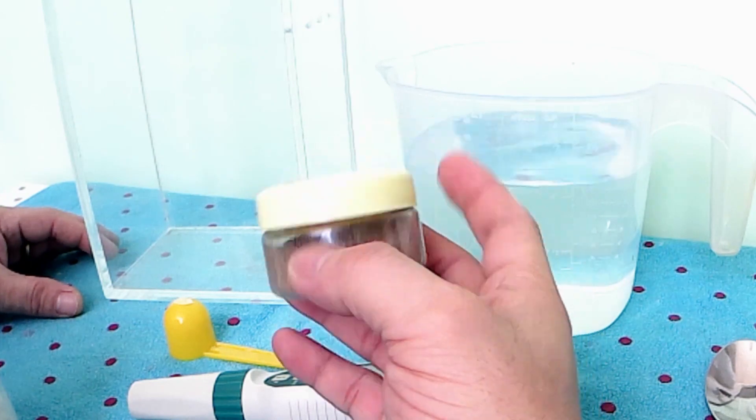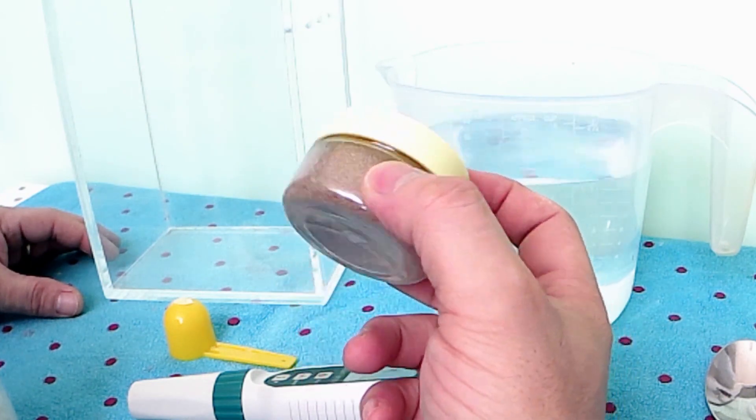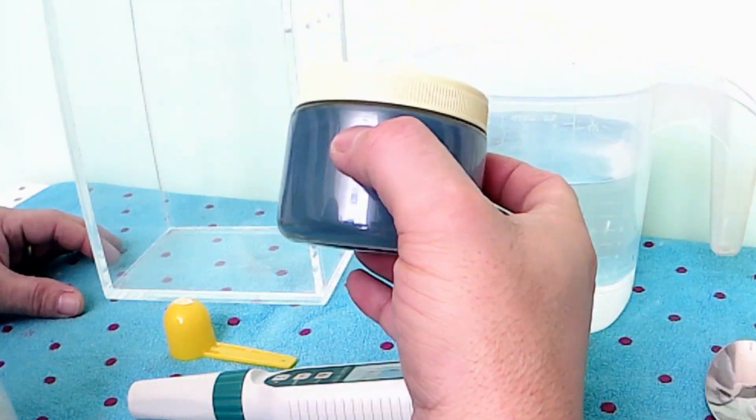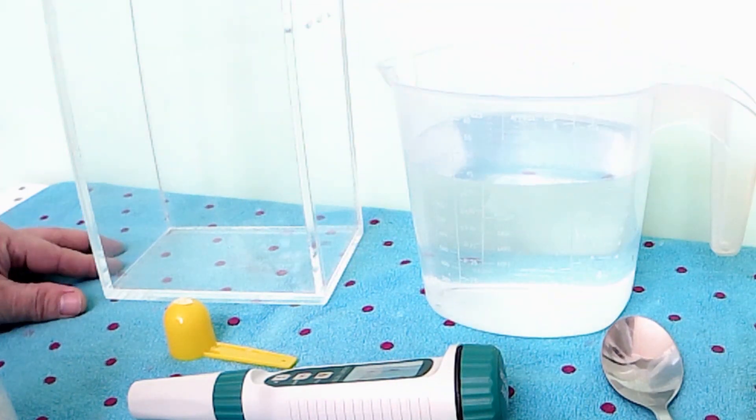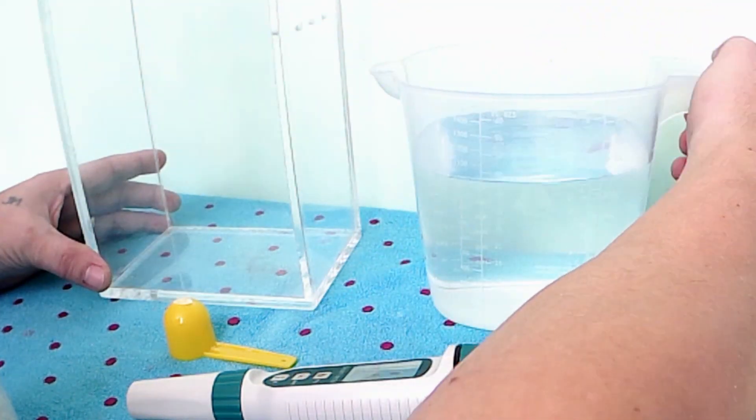I use OSI brand brine shrimp eggs. We also need spirulina powder as food. This is exactly 1 liter or 1000 milliliters.